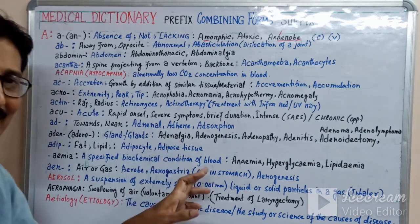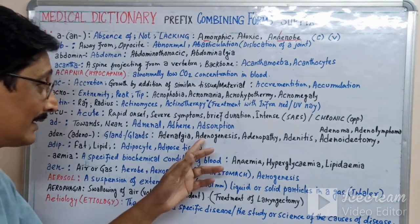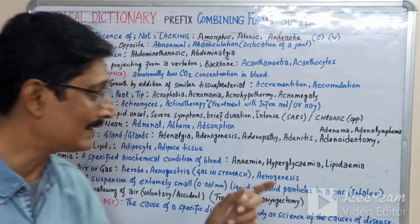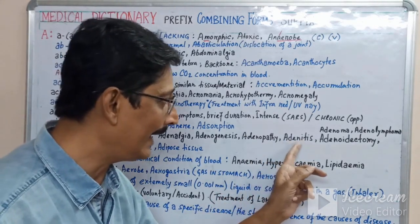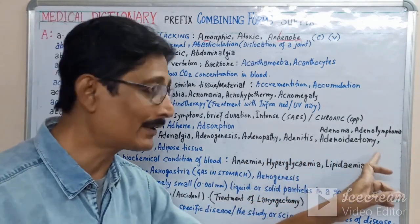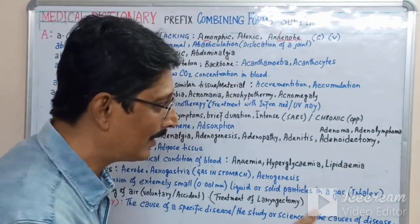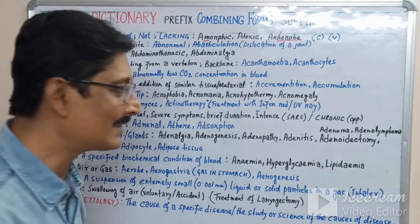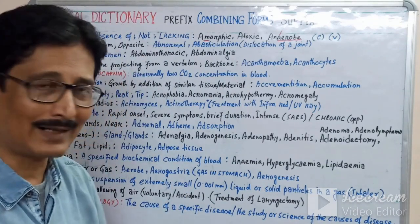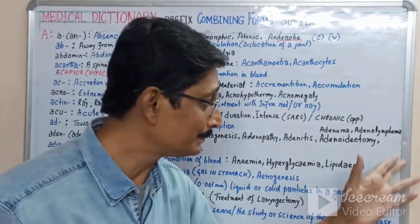'Aden-'/'adeno-' means gland or glands. 'Adenalgia' — 'algia' means pain — is pain in a gland. 'Adenogenesis' — 'genesis' means generation — is the formation of a gland. 'Adenopathy' — 'pathy' means disease — is disease of a gland. 'Adenitis' — 'itis' means inflammation — is inflammation of a gland. 'Adenoidectomy' — 'ectomy' means surgical removal — is the surgical removal of a gland. 'Adenoma' and 'adenolymphoma' are also related terms.